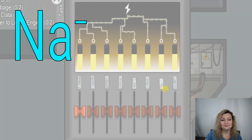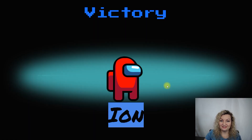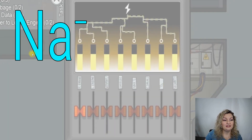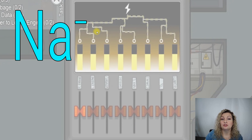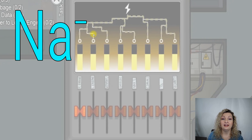Let's try another one: Na⁻. Pause your video. This is definitely going to be an ion — this is ion notation. We write our element symbol; in this case we're talking about sodium, Na, and the negative. It really has an understood one there. So what this is really saying is we have an atom that's an ion with a negative one charge — in other words, it's an anion.